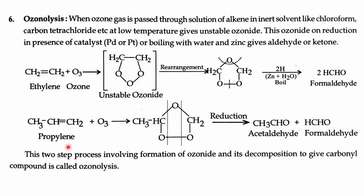Similarly, in the case of propylene, when we add ozone to propylene, the ozone gets added to the double bond — one oxygen on one side and two oxygens on the other side — forming a ring compound. It then undergoes reduction to form acetaldehyde and formaldehyde.